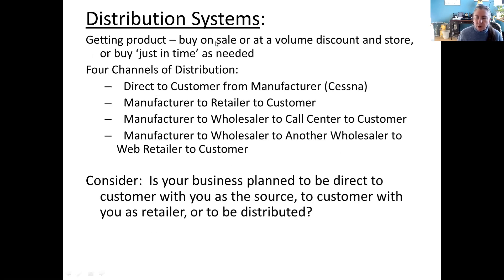And then distribution systems. Are you going to buy things on sale or at a volume discount and hold on to them, or are you going to buy just in time? A lot of manufacturing lines now do just in time, but when we have supply line disruptions — as we've been having during this crisis — that can be an issue when you have people ready to make something and you don't have the supplies you need. There are four primary channels of distribution. One example is direct from manufacturer to customer — Cessna: if you want to buy a Cessna airplane, you go pick it up from the factory. You have to consider for your business whether you're planning to be direct to the customer with you as the source, as a retailer, or providing products to other businesses for distribution.